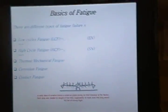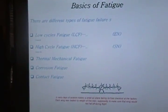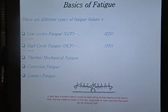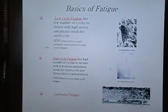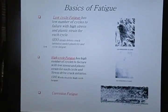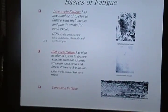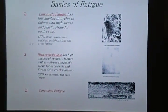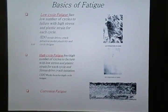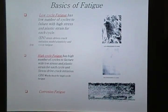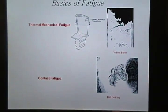Basic fatigue types: low cycle and high cycle. Low cycle fatigue uses EN curves; high cycle fatigue uses SN curves. There is also thermal fatigue and mechanical thermal fatigue, where corrosion plays a bigger role. Low cycle fatigue has a low number of cycles with failures at high stresses and plastic strains — EN strain curves drive the crack initiation model plastically. High cycle fatigue has a high number of cycles with fracture at low stress and plastic strain per cycle, and stress drives crack initiation. A few examples include turbine blades.